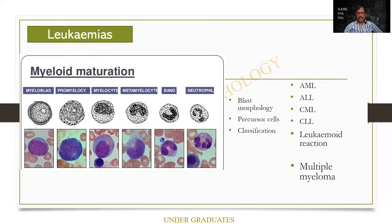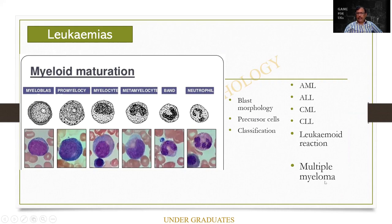Even in the theory exam, you should be able to draw these. You can be asked about blast morphology, precursor cells, and classification of leukemias or anemias. Leukemoid reaction and all of them can be kept as spotters. For AML, they can focus on Auer rods. CML is definitely a slide for you. Leukemoid reaction is a chart commonly kept. Multiple myeloma is also a chart kept for students.